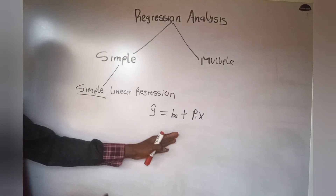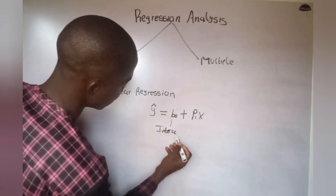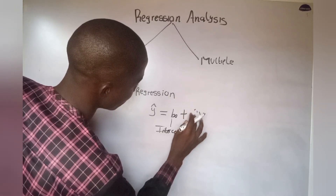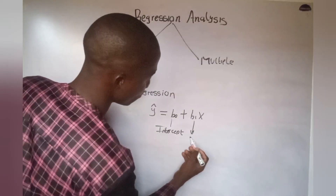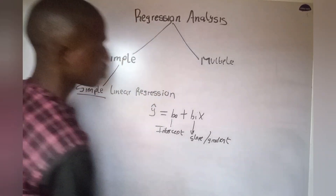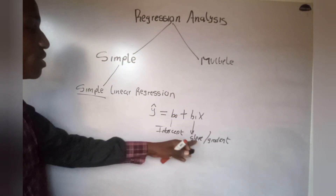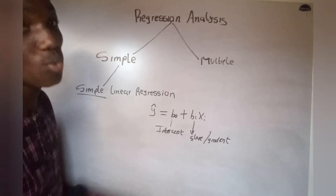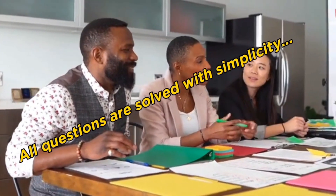Going back to our regression equation, this term here is the intercept, and b₁ is the slope — the slope is also known as the gradient. So the predicted value of y is equal to the intercept plus the gradient multiplied by x. X can assume more than just one value. I'm going to be solving example questions, and all questions are solved with simplicity.